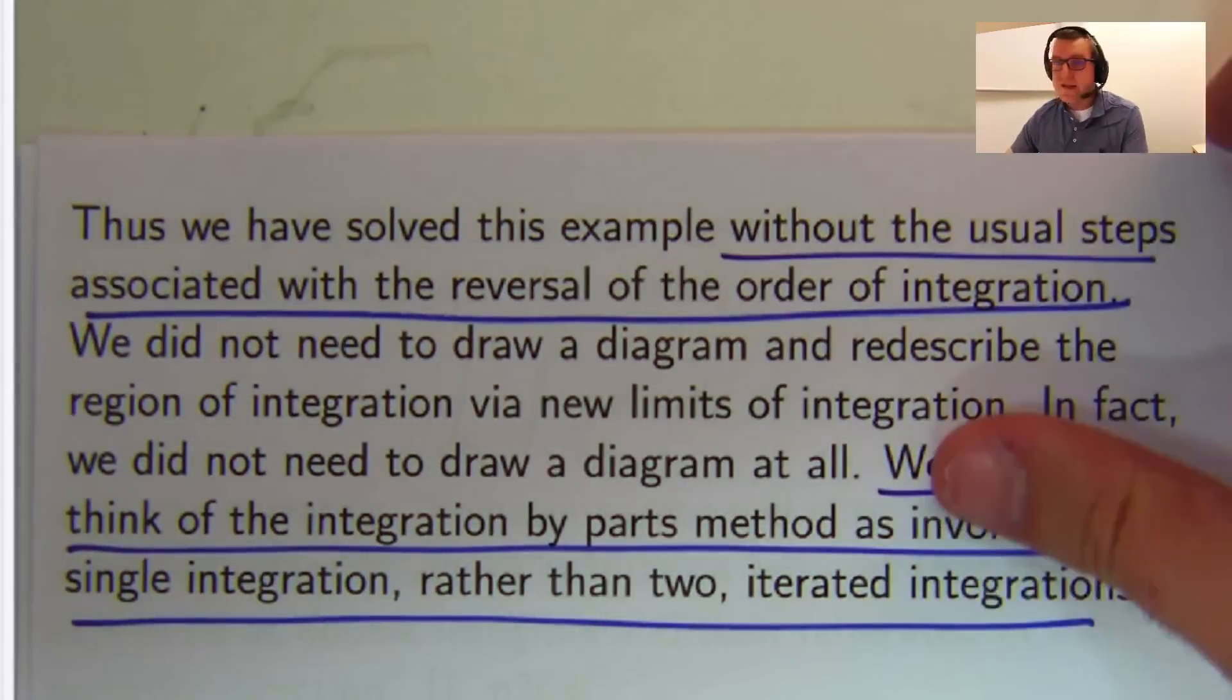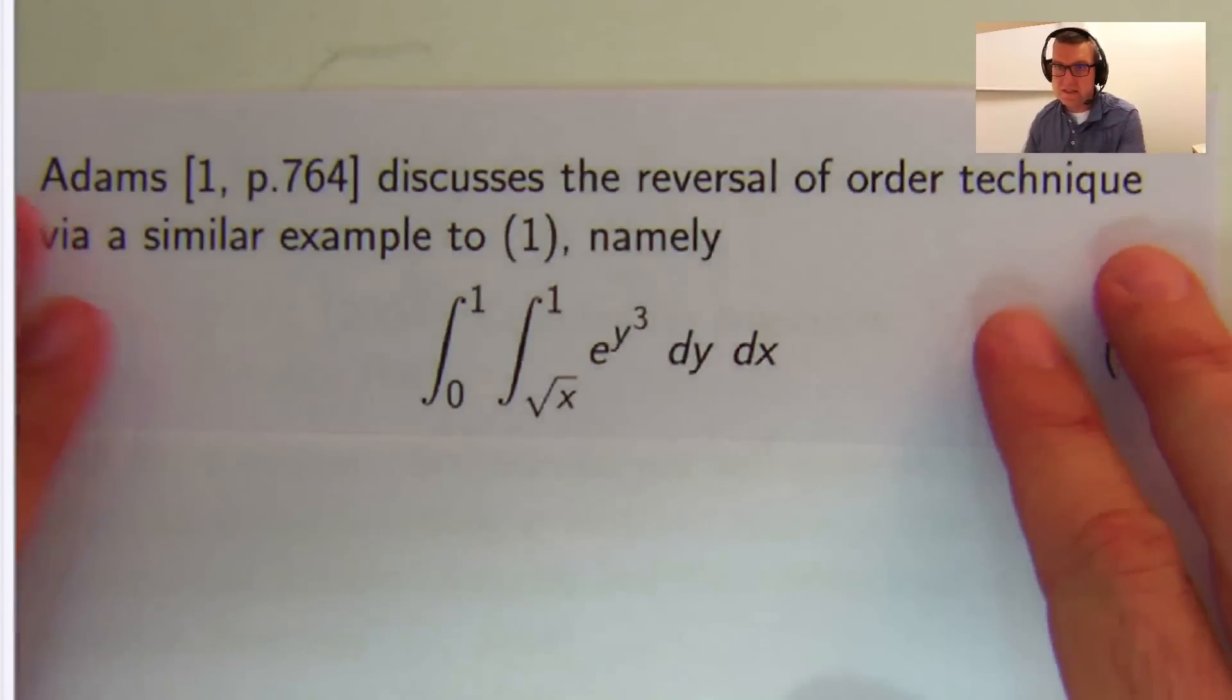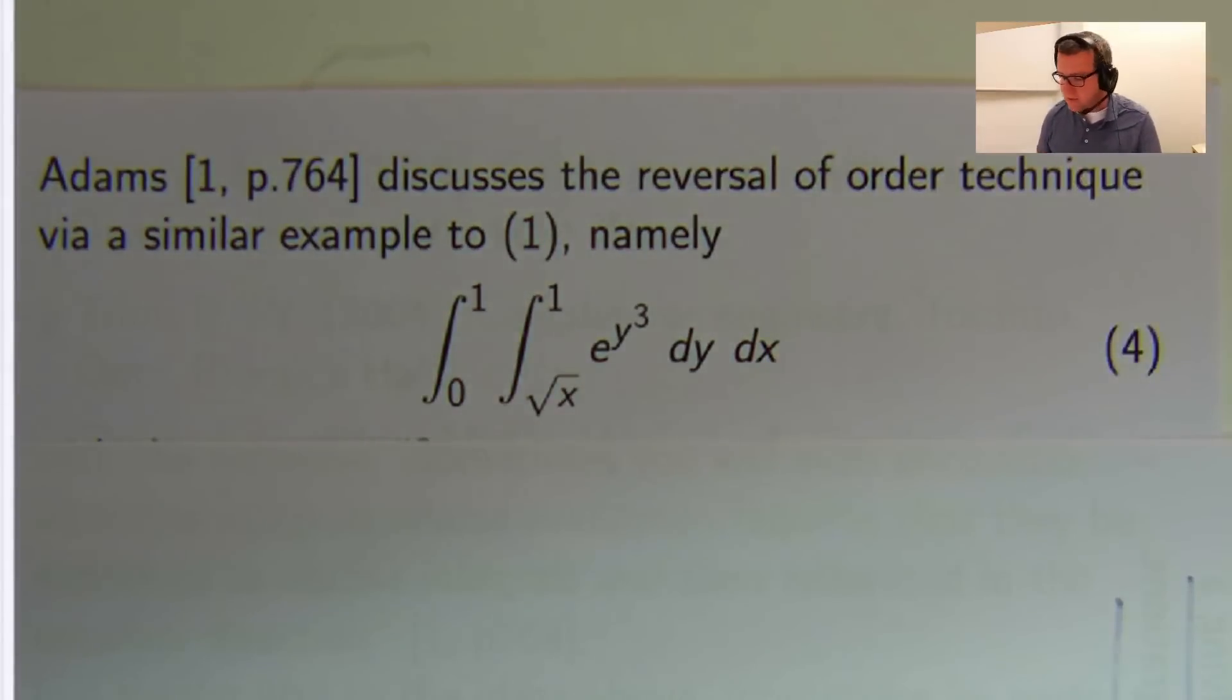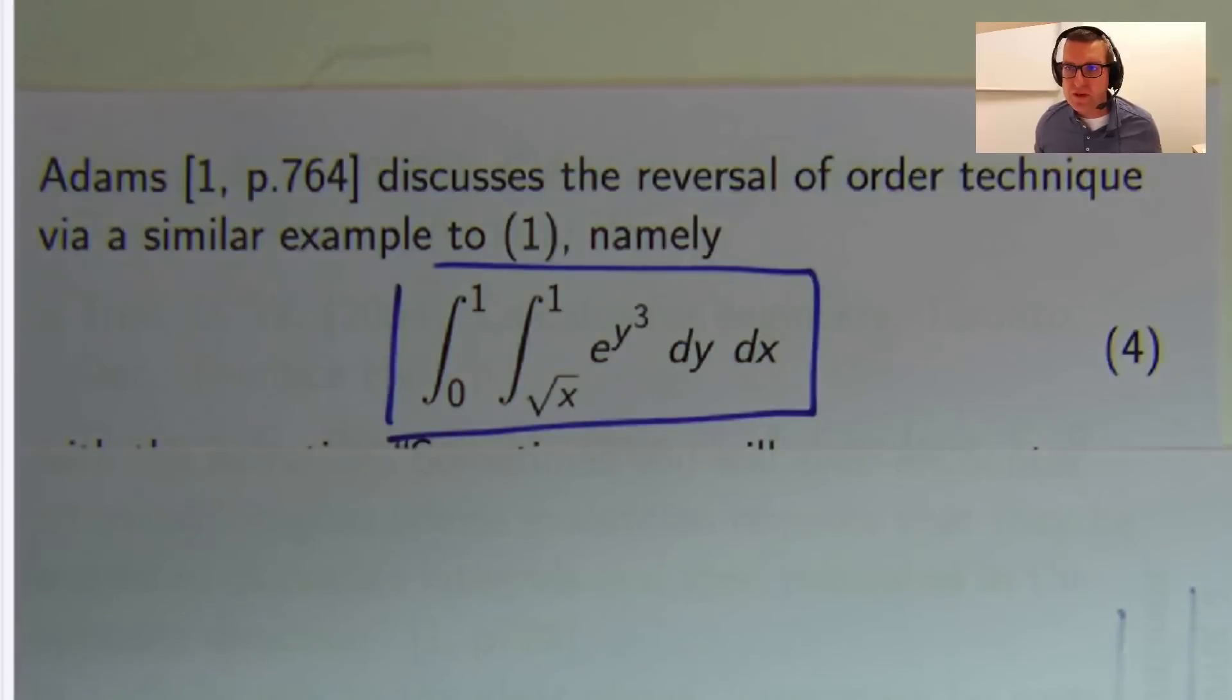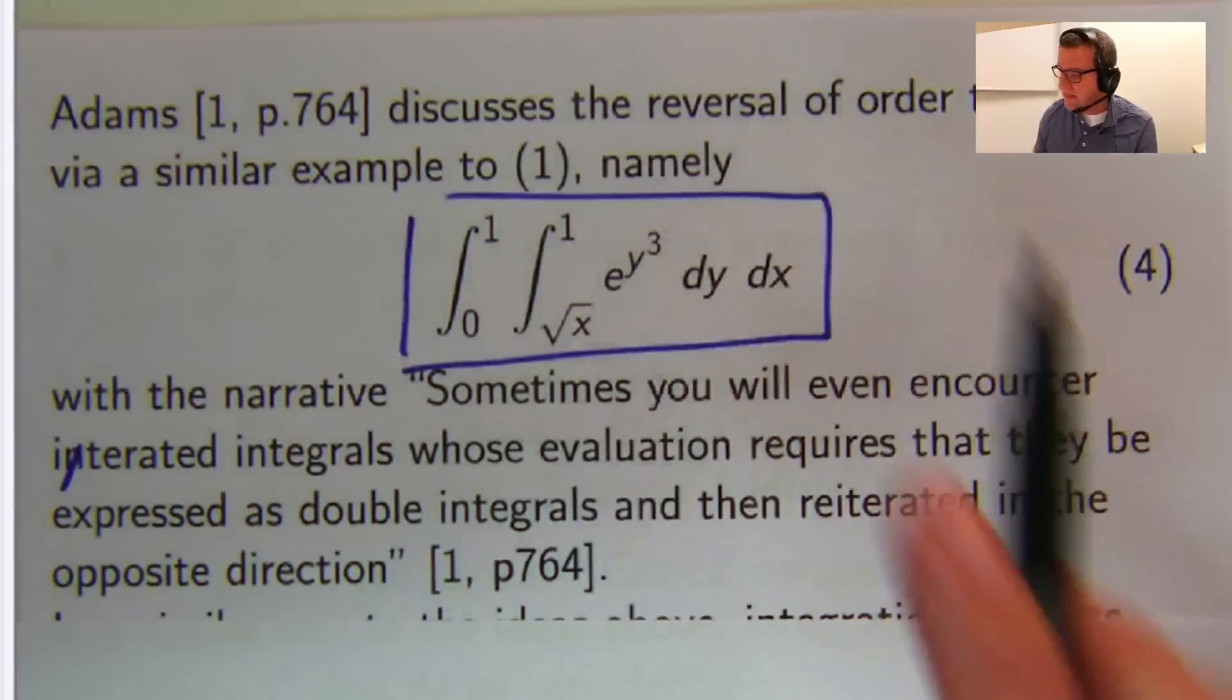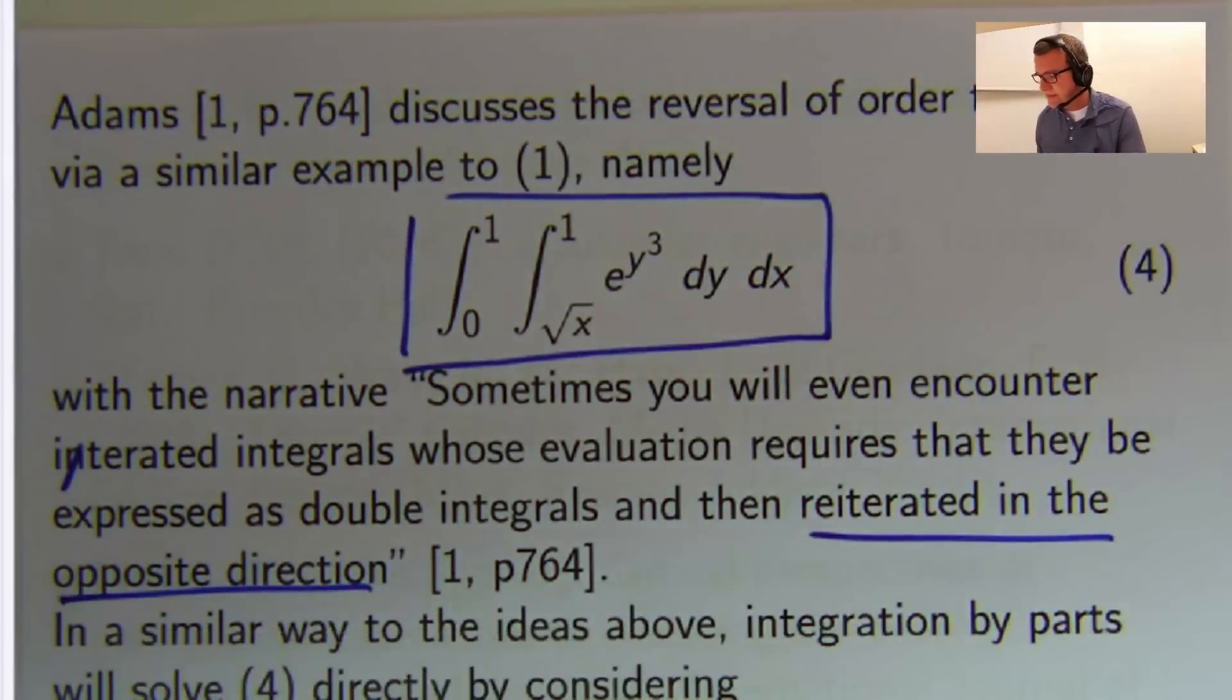Another example, Adams, who's a very famous mathematician. Again, this is similar to the previous one. If you look in Adams' book, you can see this one here. And the narrative is, sometimes you'll even encounter iterated integrals, whose evaluation requires that they be expressed as double integrals, and then reiterated in the opposite direction.